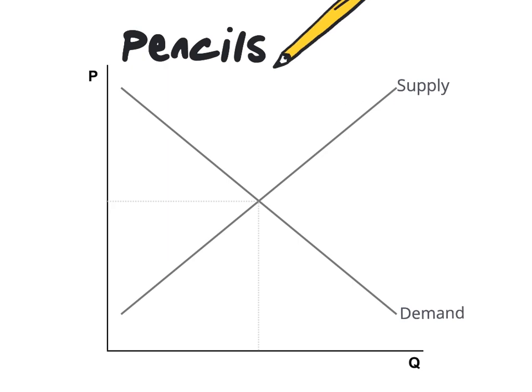In order to explain excess demand and excess supply as types of disequilibrium, let's look at a simple example. Suppose that we are in the market for pencils. Where our demand and supply curves intersect, this indicates our equilibrium point. At PE, QE, our market for pencils is in equilibrium.